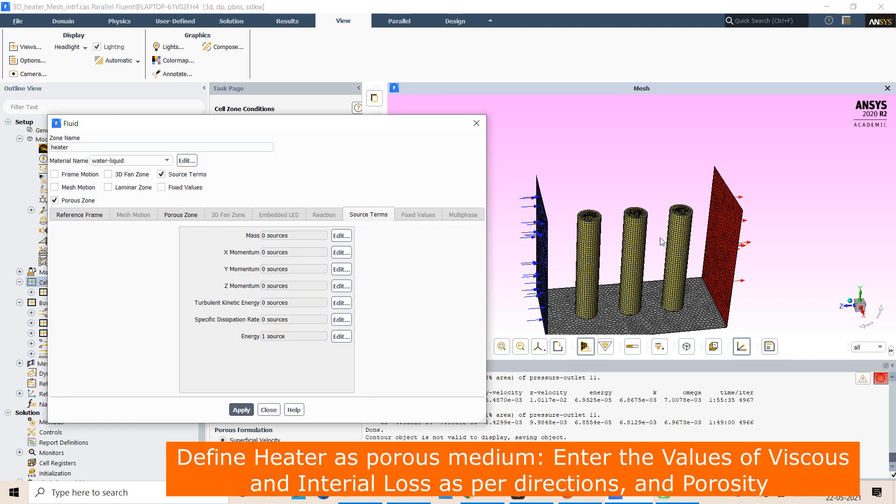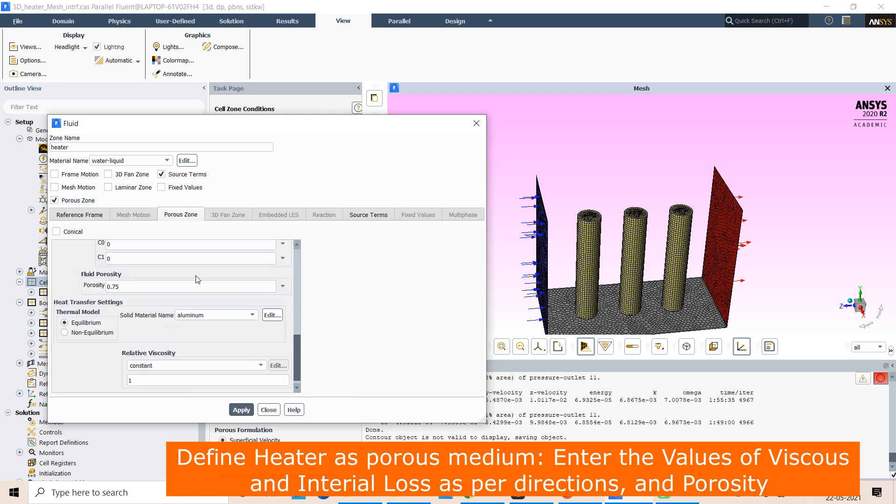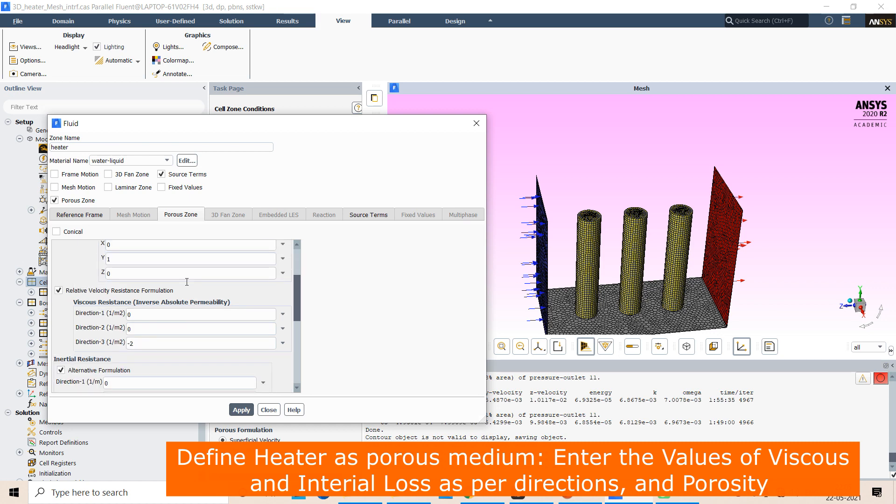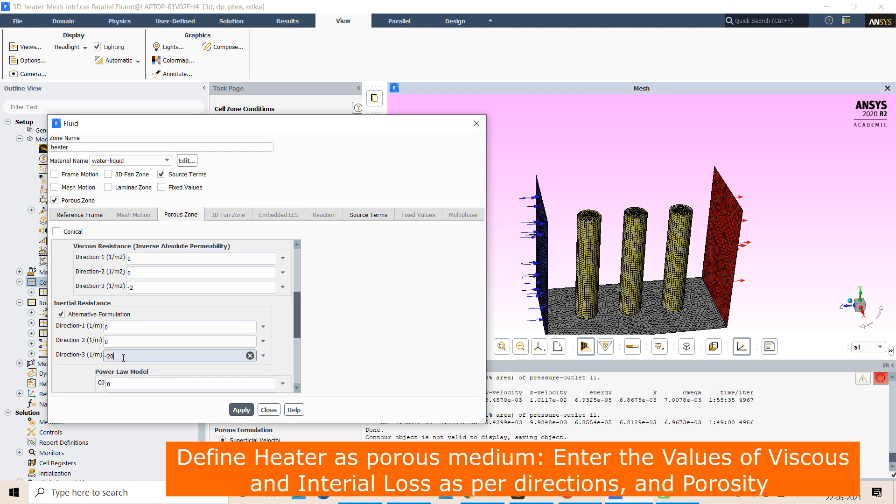Then go to the cell zones. For the heater, these are heaters I am modeling as porous medium. Go to porous medium settings. Then define directions: x, y, z. Define the viscous resistance and inertial resistance in each direction.